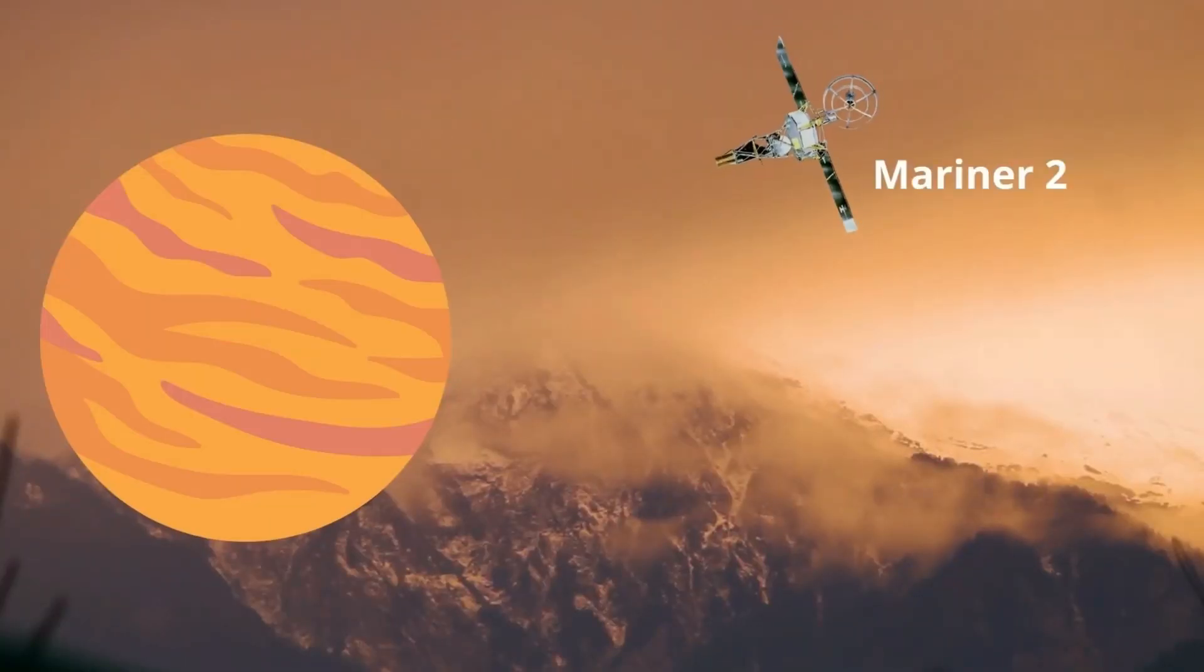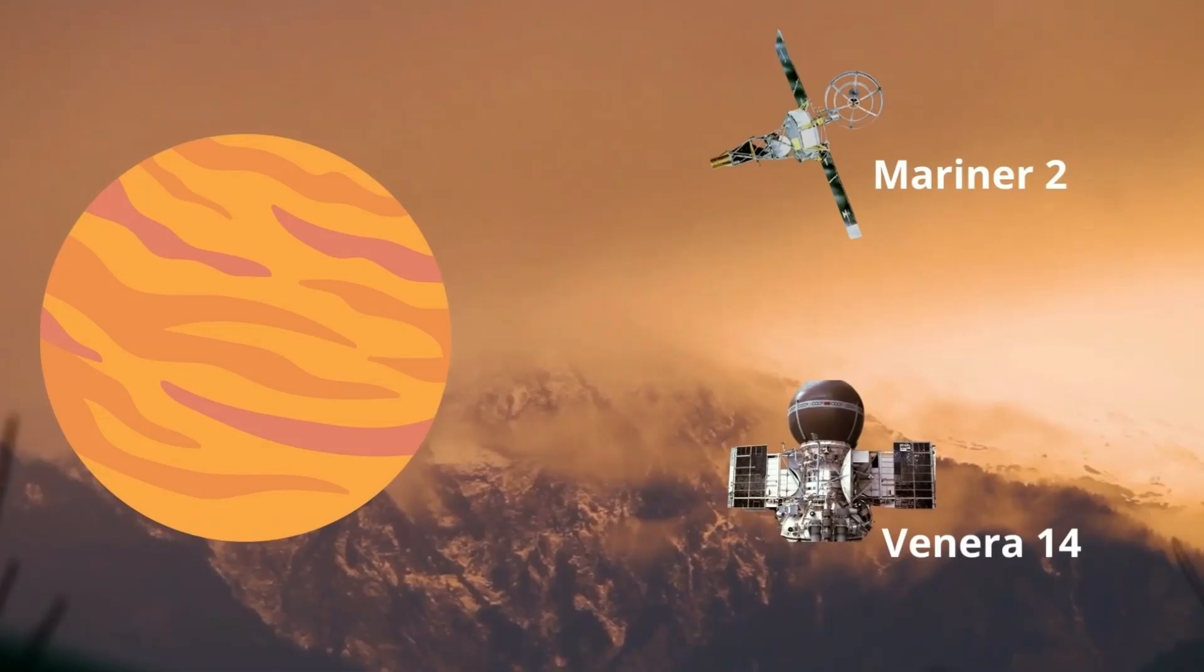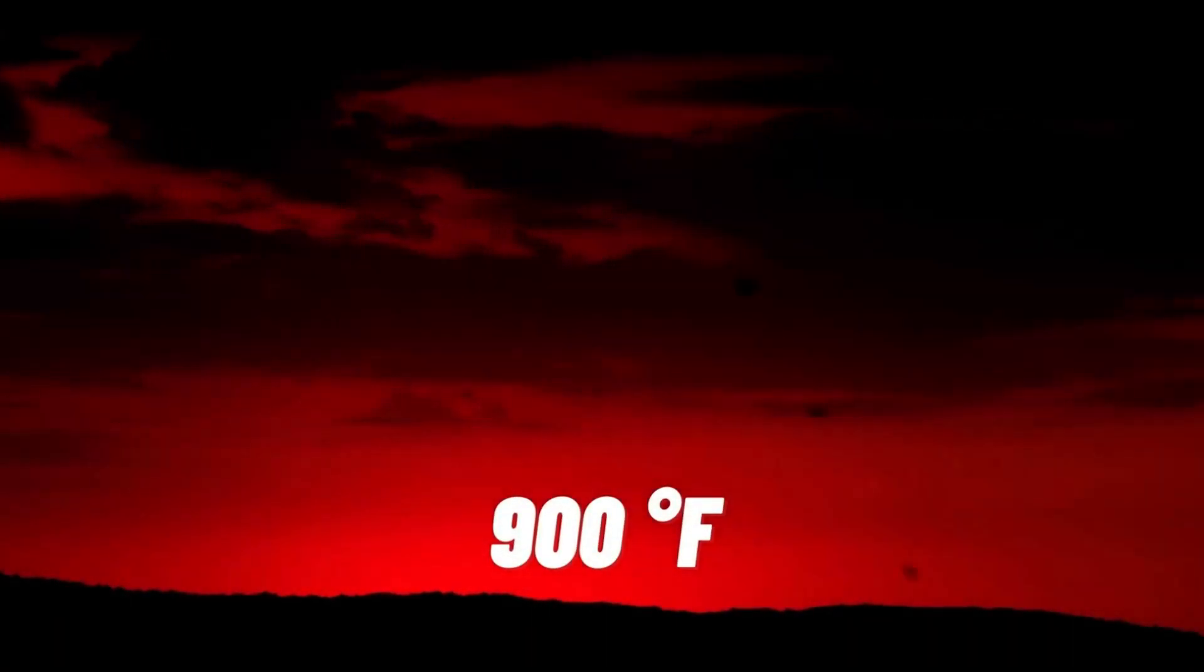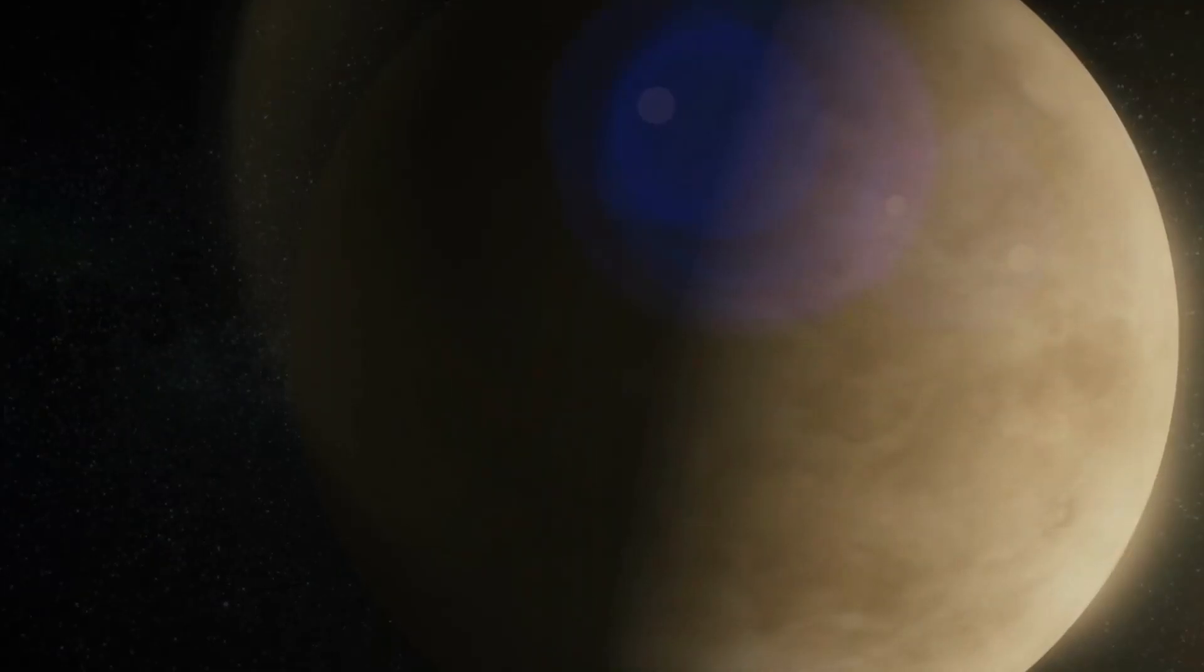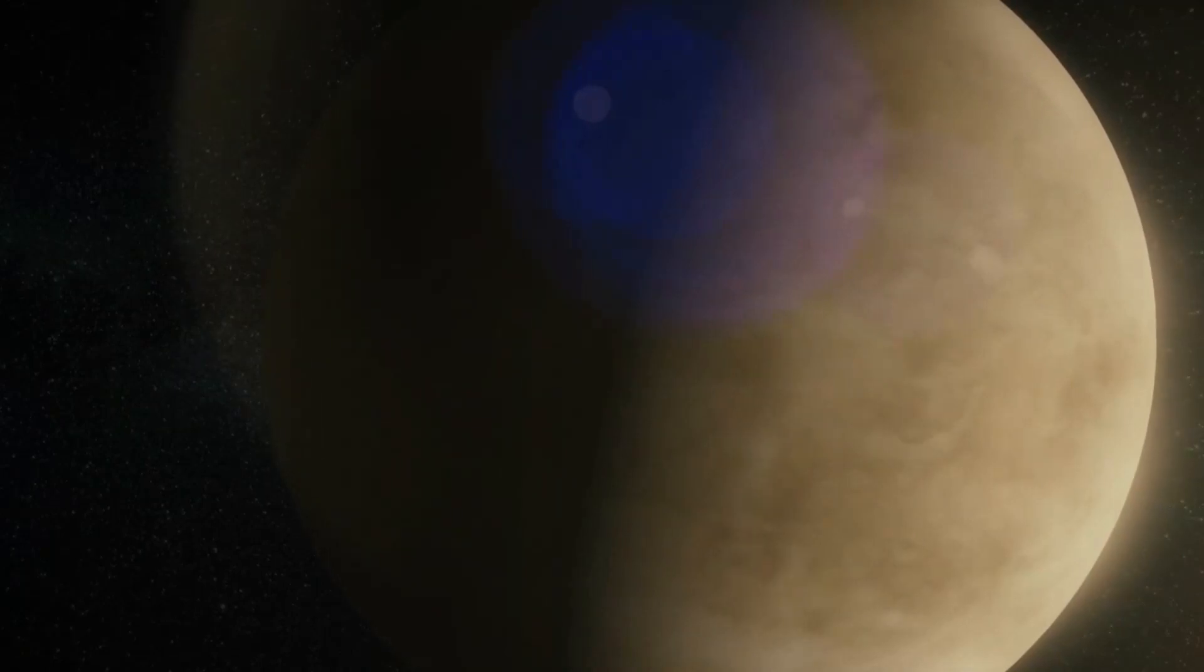The surface of Venus, as seen by Mariner 2 and Venera 14, have been measured at a blazing 900 degrees Fahrenheit. No wonder it is considered a runaway greenhouse. Prehistorically, Venus was not the pressure cooker it is now.